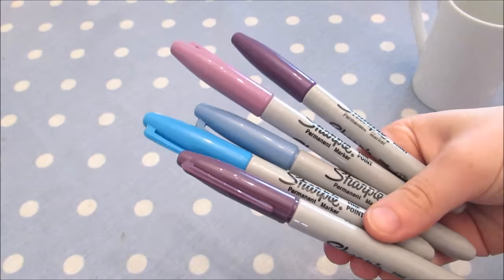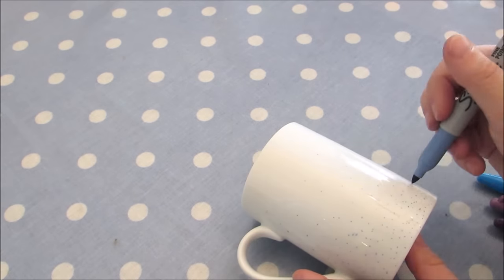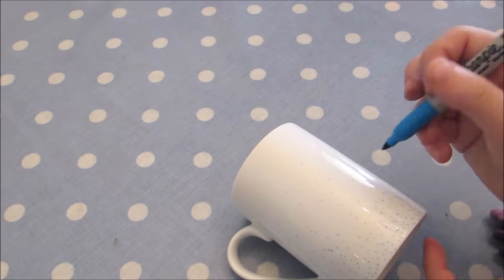For the third design I used a selection of blue and purple Sharpies. I started using a pale blue pen and made lots of dots on the mug, making the clusters of dots more dense around the bottom of the mug.